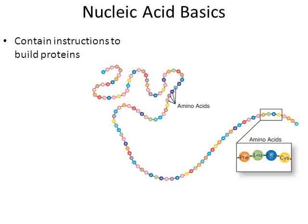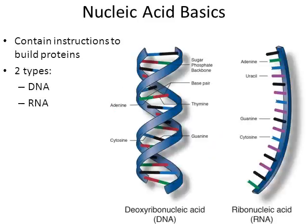How that process actually works, we'll discuss in a separate video. I have a video titled Translation where I discuss the process. Proteins are what DNA and RNA — the nucleic acids — are blueprints to build. Eventually they will tell your cells how to build proteins. There are two types of nucleic acids: DNA and RNA. DNA is what we call a double helix, and RNA is simply a single strand.